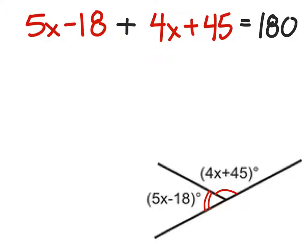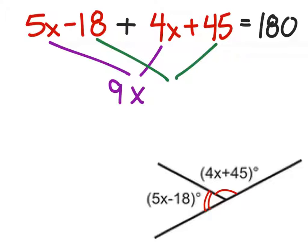From here on it's just like solving a regular equation. Some of you would like to play the switch and stay game, others would like to combine like terms, which is what I'm going to do. I got 5x plus 4x, which gives me 9x, and then the negative 18 plus 45 gives a positive 27, and that still equals 180.